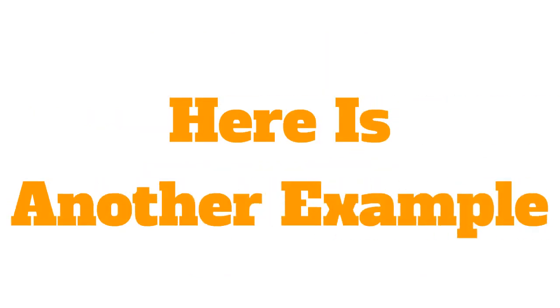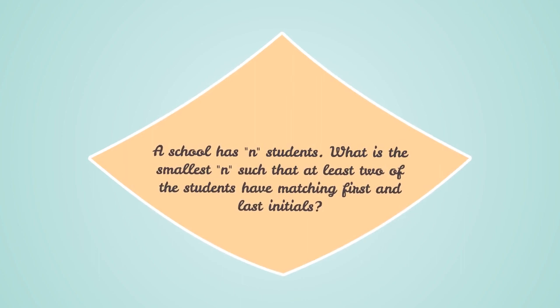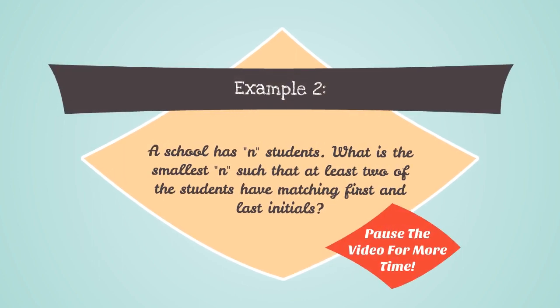Here is another example. Example 2. A school has n students. What is the smallest n such that at least two of the students have matching first and last initials? Pause the video for more time.